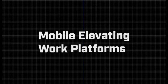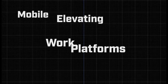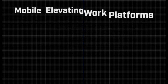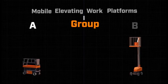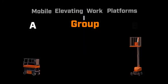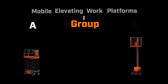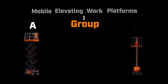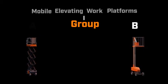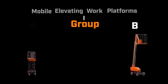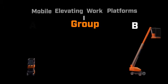Scissor lifts belong to a group of machines called mobile elevating work platforms. Mobile elevating work platforms are broken down into two groups. Group A are platforms which extend directly above the chassis, while Group B are platforms that can extend outside of directly over the chassis.